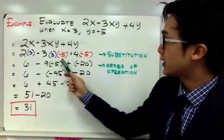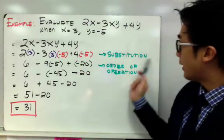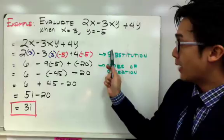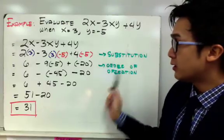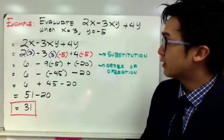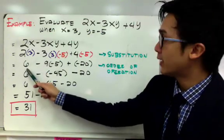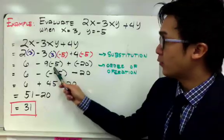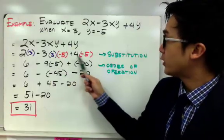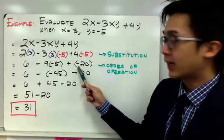By the order of operation, we need to multiply all the numerical values that we can simplify, like 2 times 3, which gives us 6, 3 times negative 5, which gives us negative 15, and 4 times negative 5, which gives us negative 20.